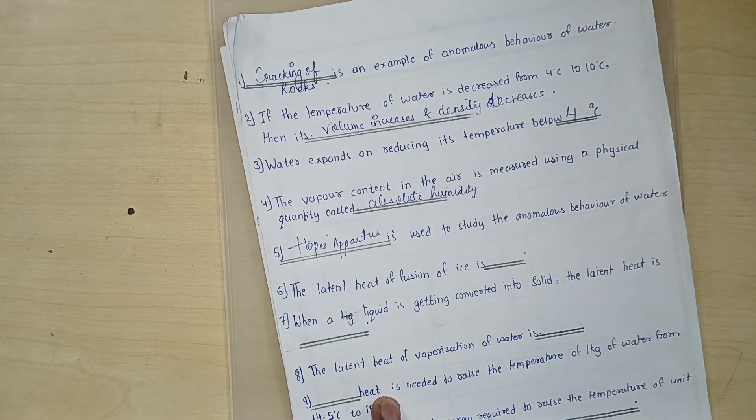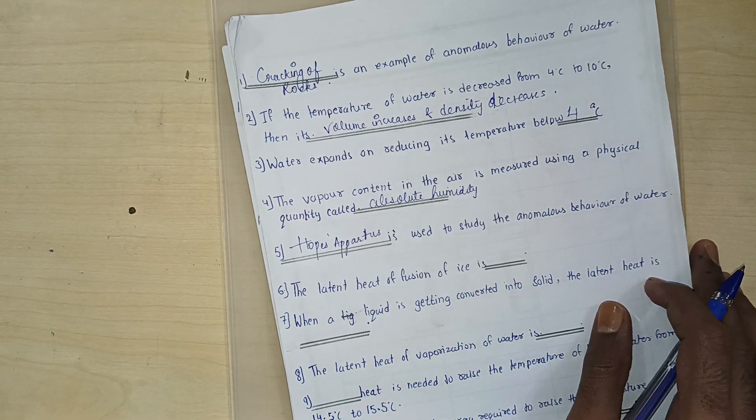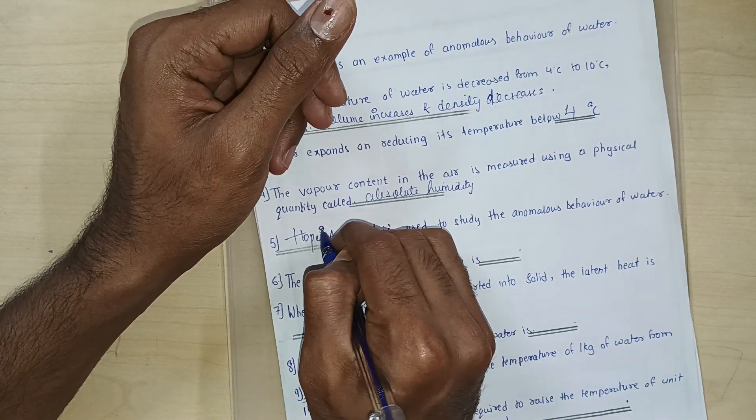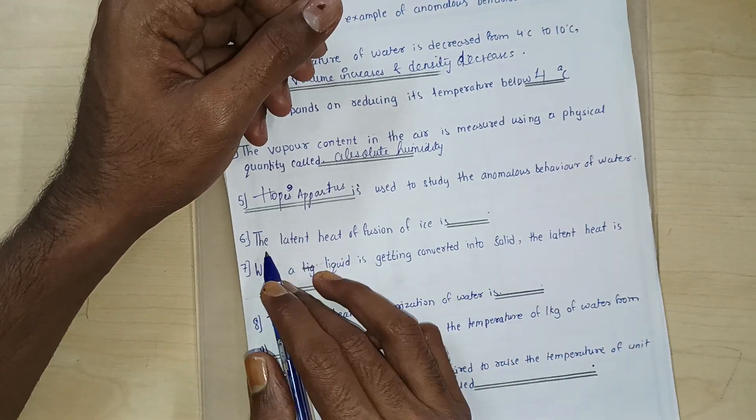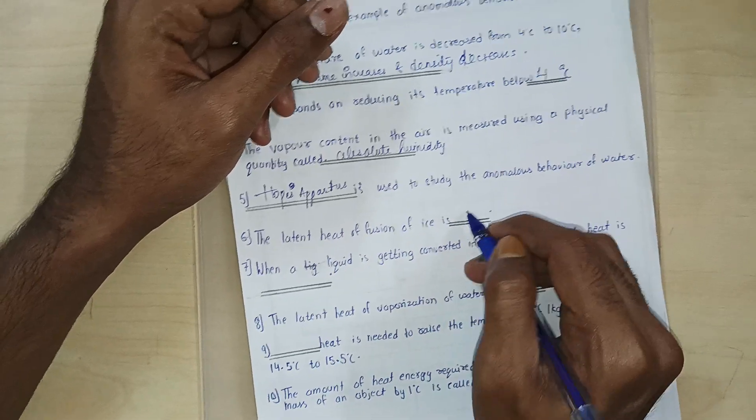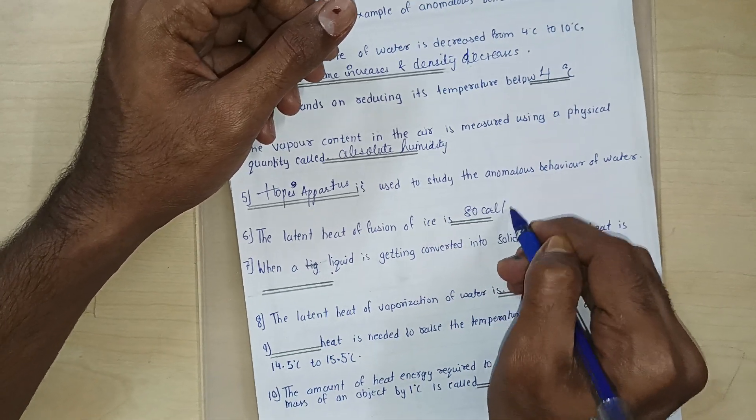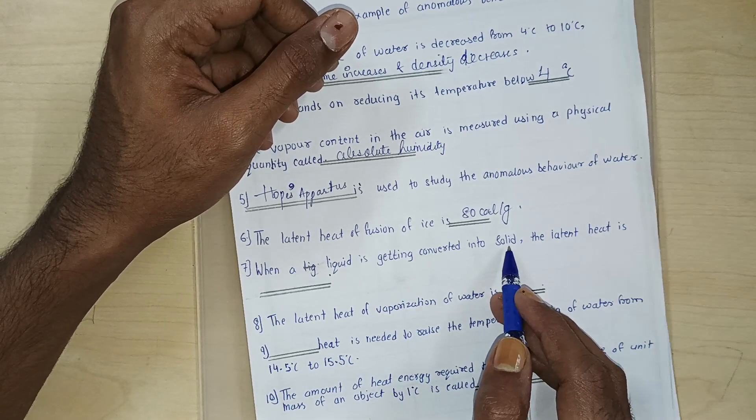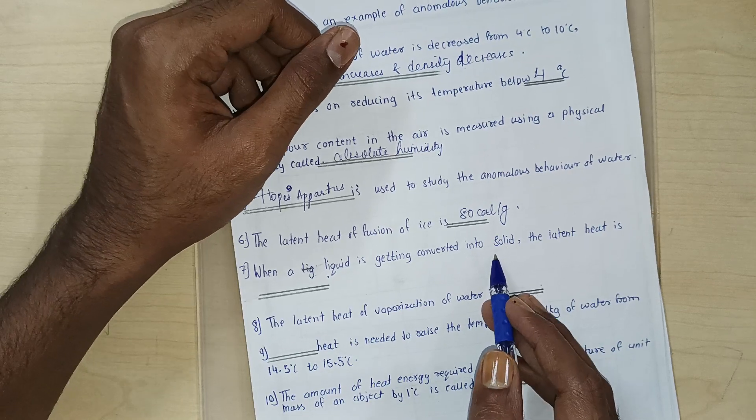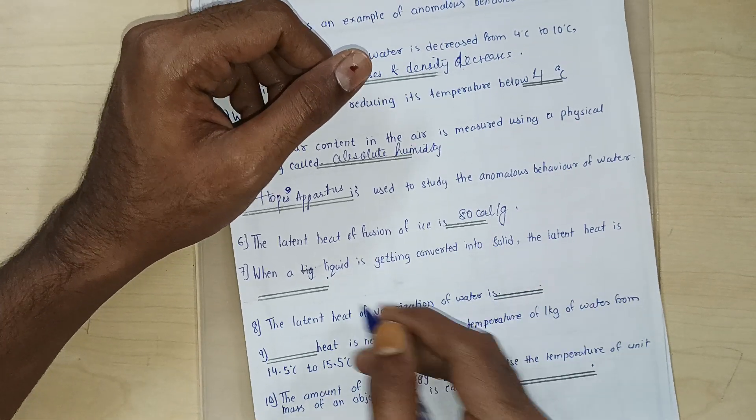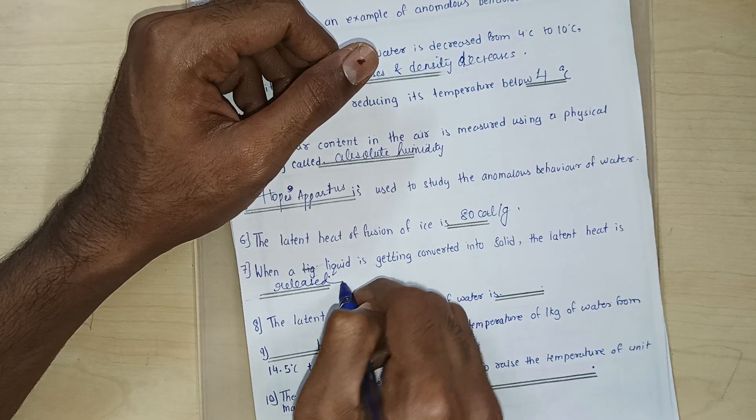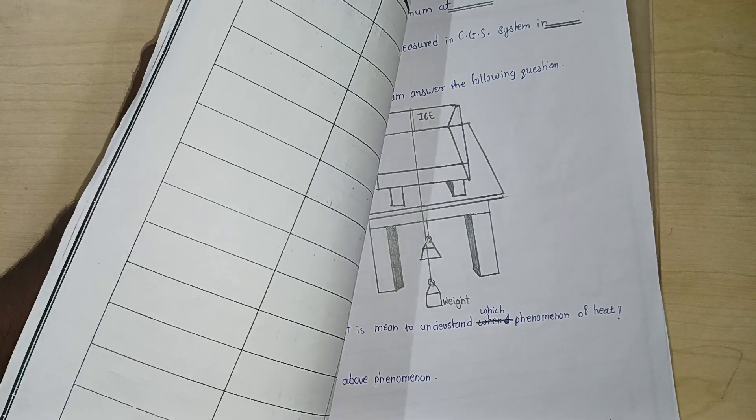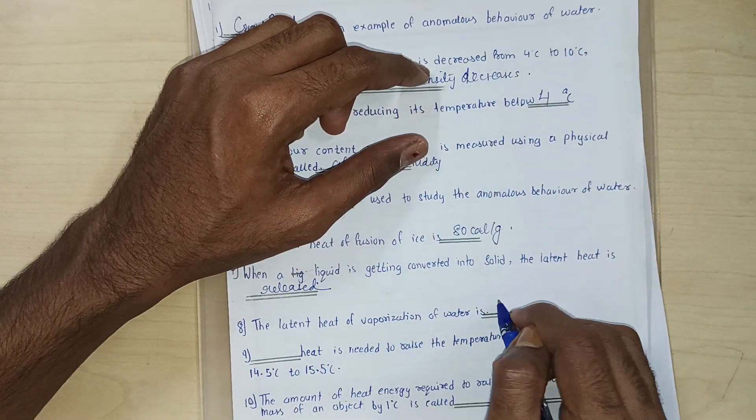The latent heat of fusion of ice is our next question, yes or no? So we are going to put a comma here. Next question that we have over here is the latent heat of fusion of ice is 80 calorie per gram. When a liquid is getting converted into solid, the latent heat is released. The latent heat of vaporization of water is how much? 540 calorie per gram.